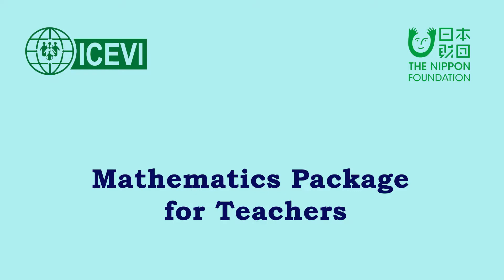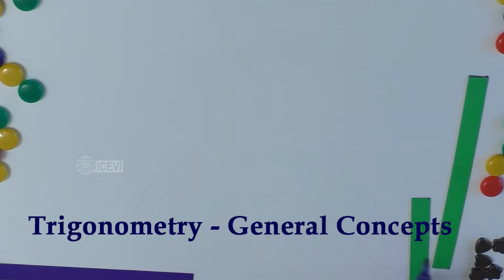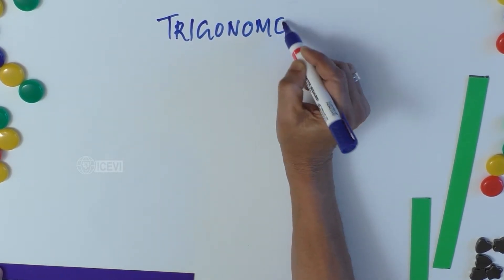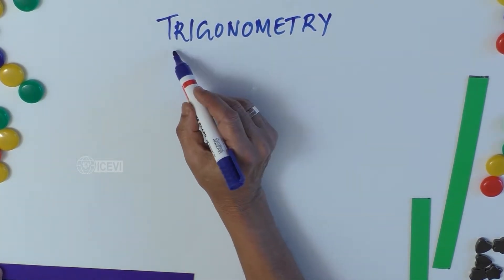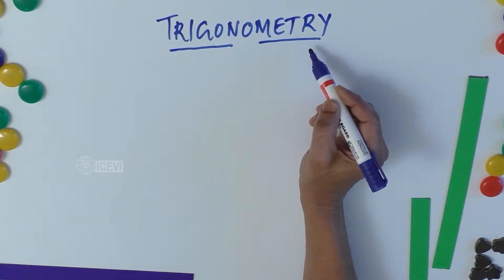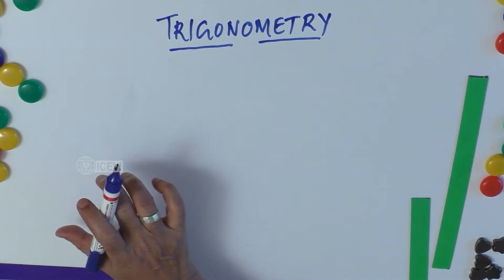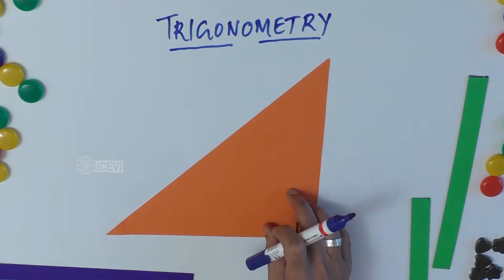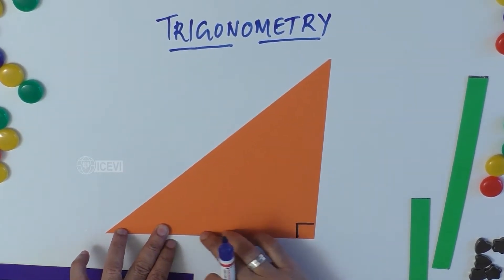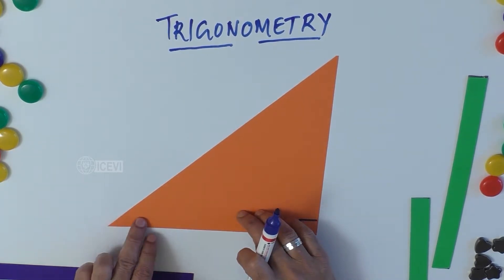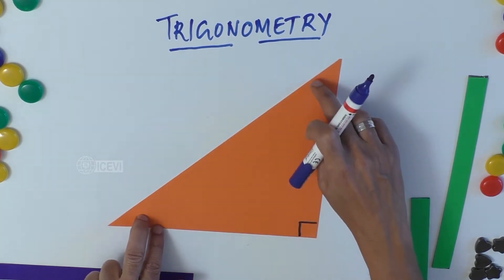This is the ICBI Nippon Foundation Mathematics Package for Teachers. The title of the video is: Trigonometry — Some General Concepts. Trigonometry comes from the Greek words 'trigone' meaning triangle, and 'metra' meaning measurement. So we are dealing with the triangle, which has three sides and three angles.